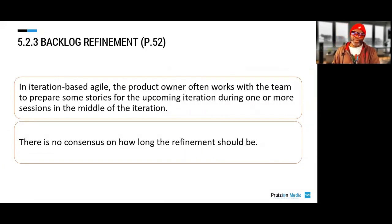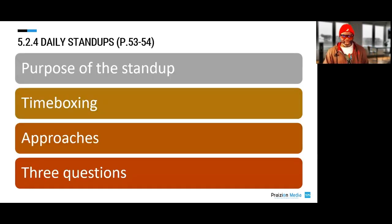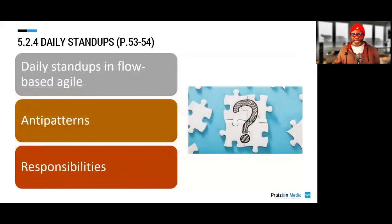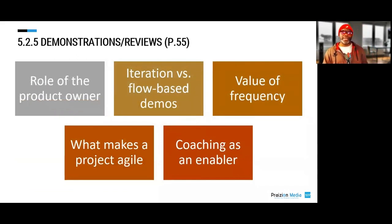In iteration-based Agile, the product owner often works with the team to prepare stories for the upcoming iteration. The guide also covers daily stand-ups, which are really for syncing up — not for giving status; we call giving status an anti-pattern. We also hear talk about demos or reviews, and it's the role of the product owner to know who to invite to these meetings.